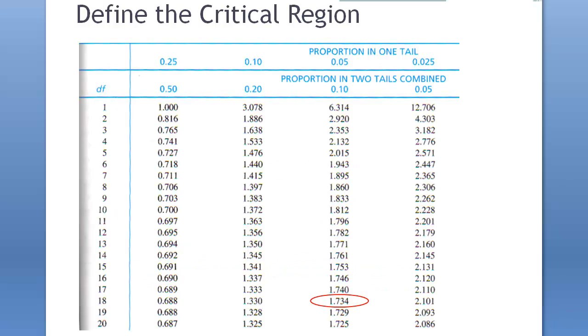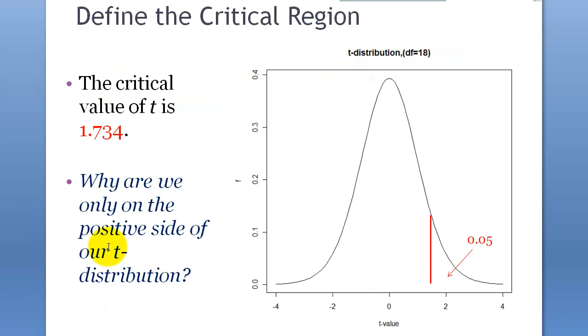So when you look at the t-table, we have to look at this one-tailed value, so it's here, and 18, and intersection, cross-section of that, and 18 is 1.734. So that's going to be the critical value of t, and it's right there.